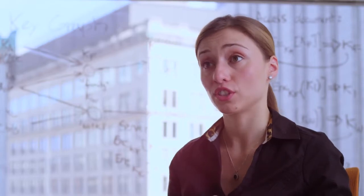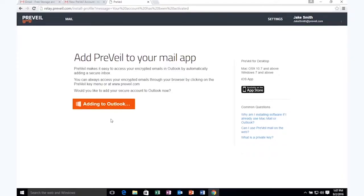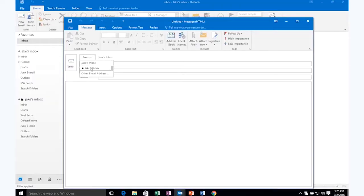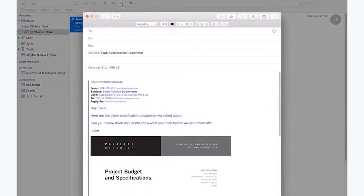Prevail integrates in the way users are used to using services today. For example, a user can still use the Outlook client on Windows, or the mail client of Apple.